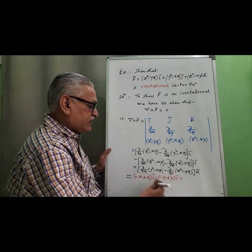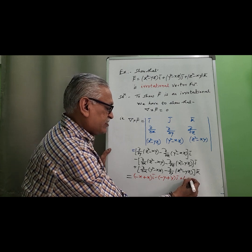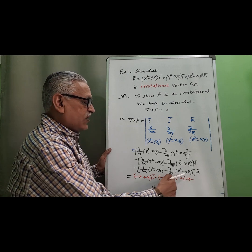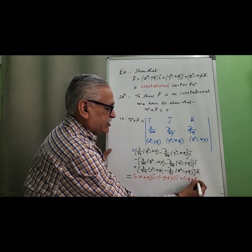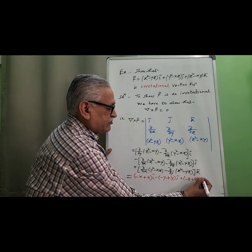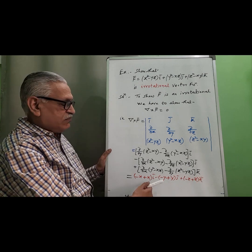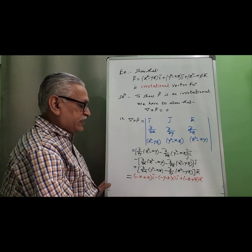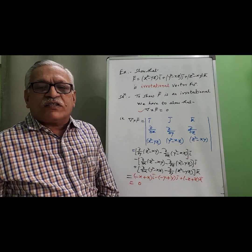Plus, differentiating this with respect to x, we get derivative of z. And with respect to y, we have z into k. Therefore, this is 0i minus 0j plus 0k. Therefore, 0, irrotational vector.